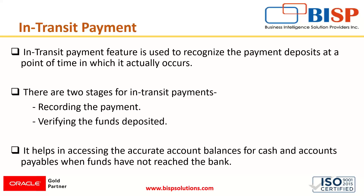In the first stage, a payment record is entered mainly to track that a payment is being made. For the time being, the amount of this payment is taken into a temporary account known as the cash in-transit clearing account, until it is verified by the banks.